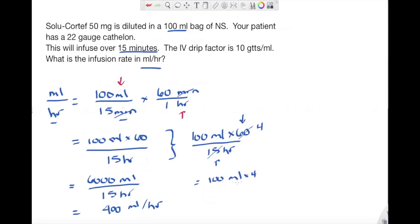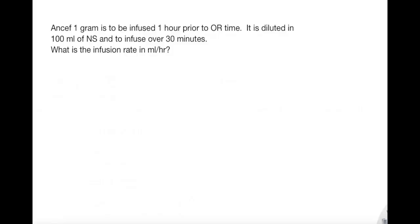And we've made it to our last question of this practice. Ancef one gram is to be infused one hour prior to OR time. It is diluted in 100 mLs of normal saline and to go over 30 minutes. What is the infusion rate? Again, I'm looking for volume over time: mLs per hour. So I go back to my question. What do I have in there that would satisfy this equation? I have 100 mLs over 30 minutes.